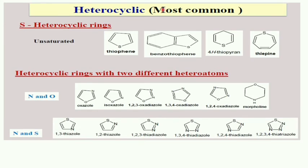For sulfur-containing heterocyclic ring systems: thiophene is the unsaturated 5-membered ring with sulfur; benzothiophene is thiophene fused with benzene. Thiopyran is the 6-membered ring with sulfur, and thiepine is the 7-membered ring with sulfur.